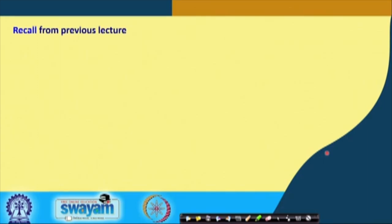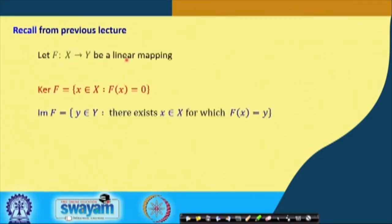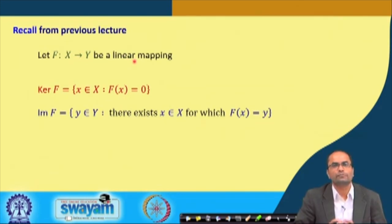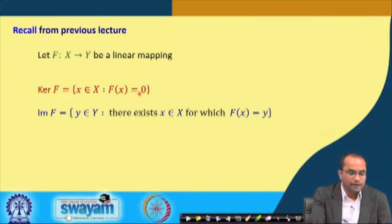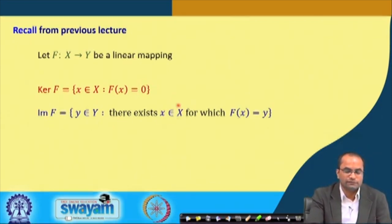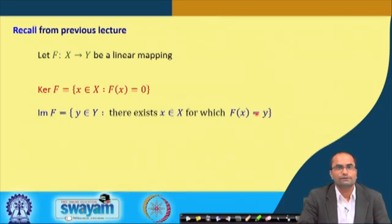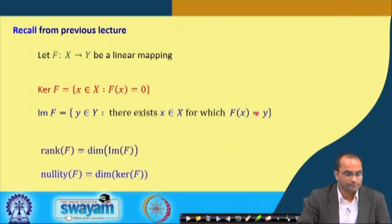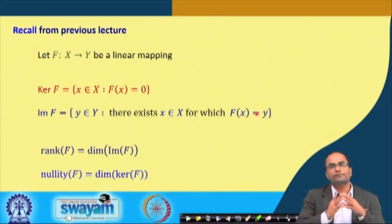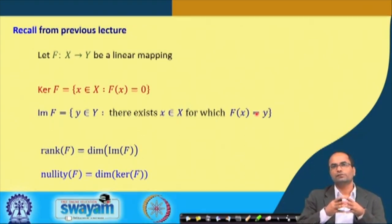To recall from the previous lecture: the kernel of f is defined as the set of vectors from vector space X whose map is 0 in vector space Y. The image is all elements of Y for which there exists an x in X such that f(x) equals that element. The rank of f is the dimension of the image of f, and the nullity is defined as the dimension of the kernel of f.